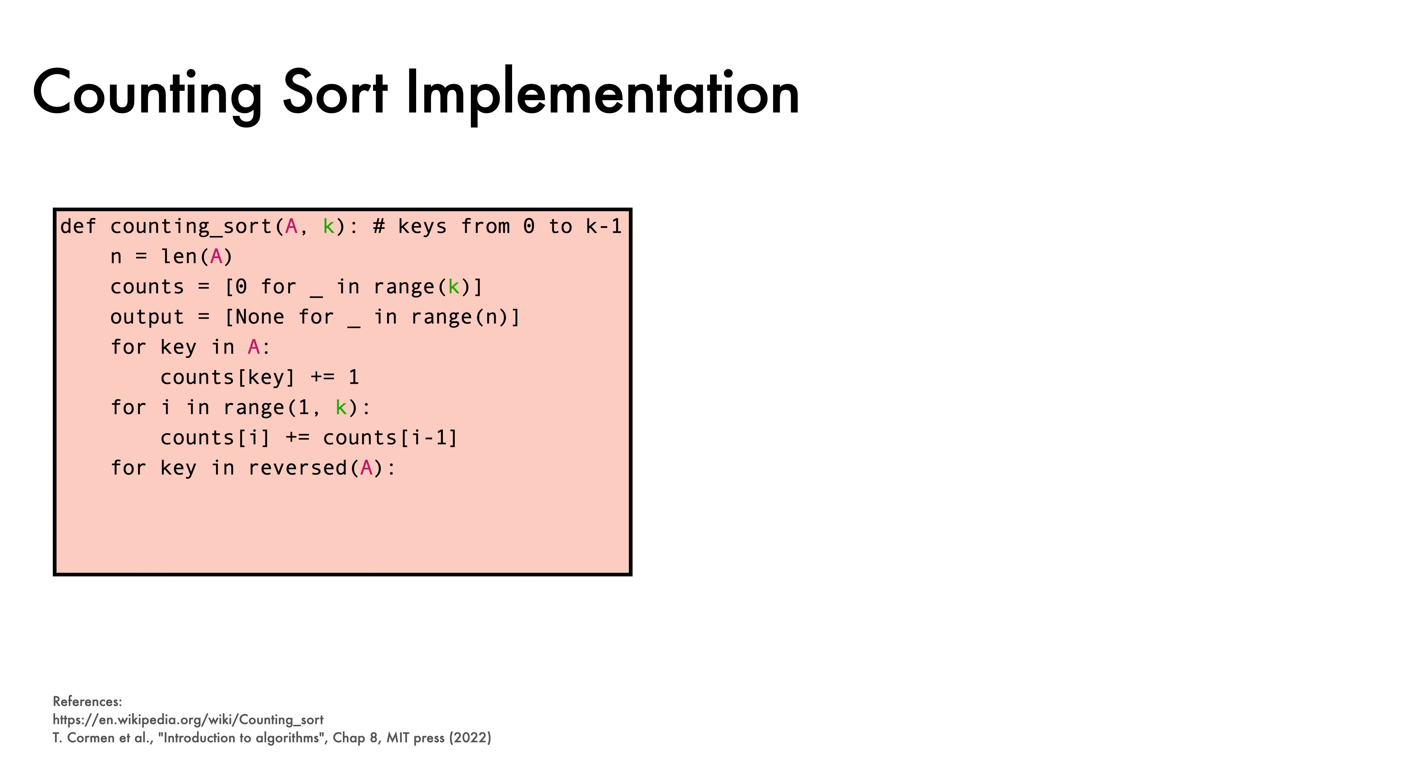We then loop over the keys of the original array in reversed order, storing the key in the appropriate output location and decrementing the corresponding count. This final loop implementation is slightly different to the one proposed by Harold Seward, but the core idea is the same: use counts to determine locations. Finally, we return the output.